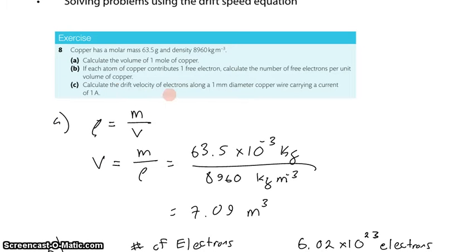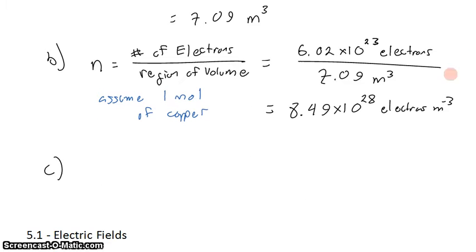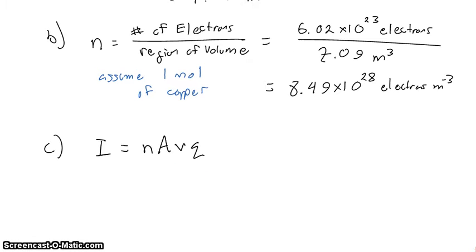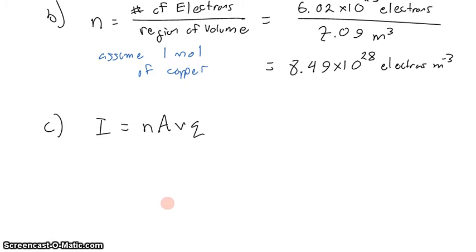Part C says calculate the drift velocity of the electrons along a one millimeter diameter copper wire carrying a current of one amp. If we're looking for the drift velocity, we go straight to the drift velocity equation, which tells us that the current in a conductor is the electron volume density times the cross sectional area of the conductor times the drift velocity times the charge of the charge carriers, which would be the charge of an electron.